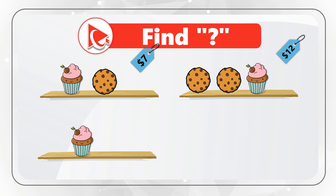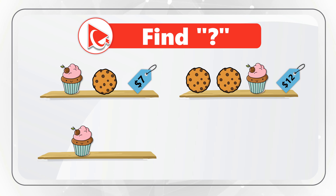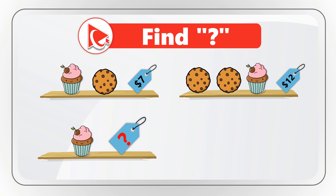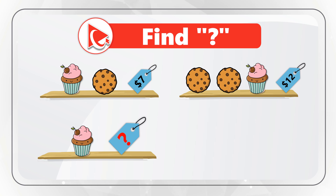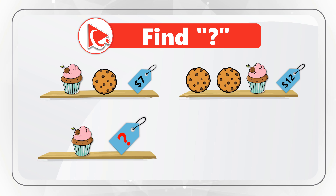Two sets have price tags associated with them, and the last set does not — you need to calculate the price tag for the last set. The first set consists of one cookie and one cupcake, and the price tag is $7. The second set consists of two cookies and one cupcake, and the price tag is $12. The last set consists of only one cupcake, and you need to calculate and select its price out of four possible choices. Choice A: $5.